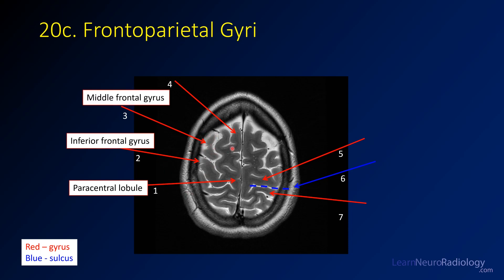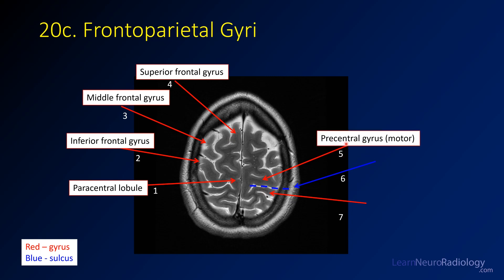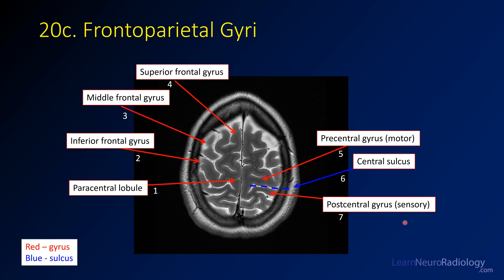Here you have the middle frontal gyrus, and here you have the superior frontal gyrus — the same ones you see on the coronal image but shown on the axial image. Number five is the precentral gyrus, which is the motor cortex. This is the central sulcus, which divides the precentral gyrus from the postcentral gyrus — your primary sensory cortex.